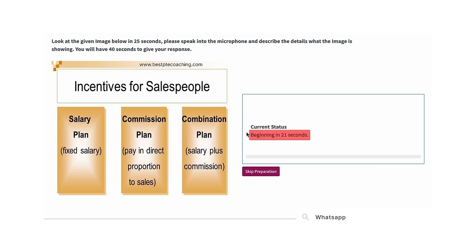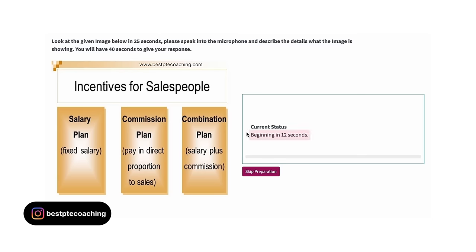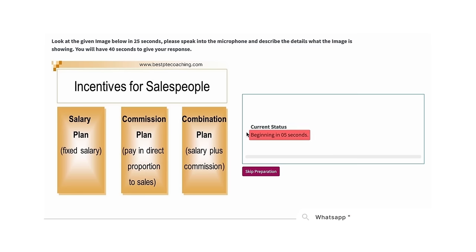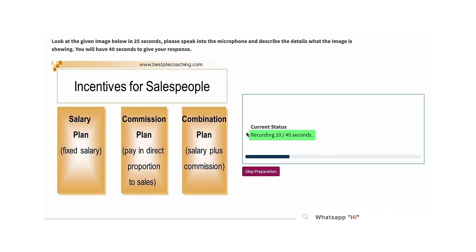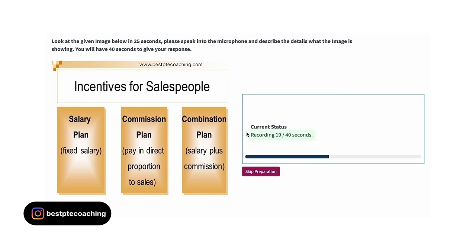Demo answer for an image about 'Incentives for Sales People': 'The image explains information about incentives for sales people. I am supposed to speak for 40 seconds on this image. There are different parts in the image which are salary plan fixed salary, commission plan paying direct proportion to sales, and also it has combination plan salary plus commission. One of the parts has maximum value while the other has minimum value. To conclude, the image is highly informative and insightful.'